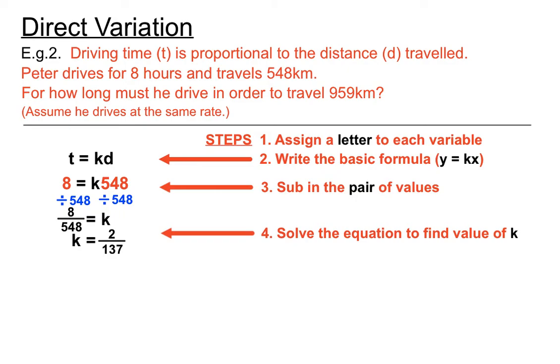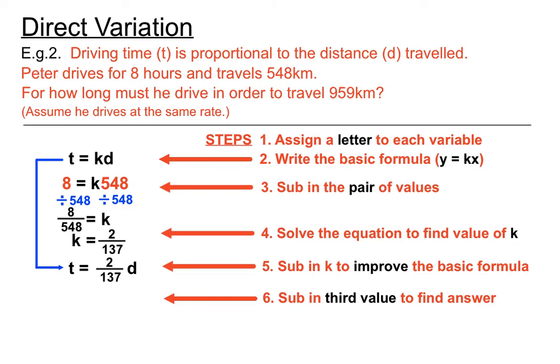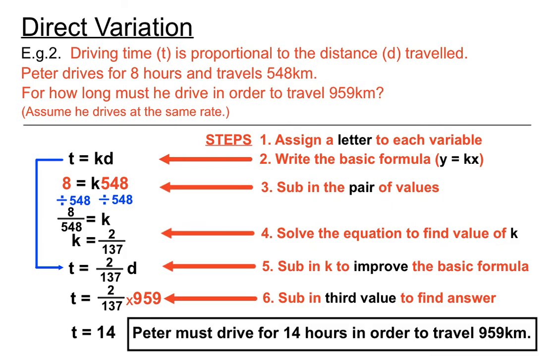We've found a value for K. Can you remember the next step we do here? Once we've found the value of K, we can improve the formula by subbing in K and replacing K in the original basic formula with the value that we found. So we've got T equals, instead of T equals KD, we've got T equals 2 over 137 lots of D. Our last step is to sub in our third value. This is the number that's mentioned off to the side as the last thing. 959 kilometers. It's a D for distance. It's going to go in there and replace our D. So we'll multiply it by 959 instead of D and we'll get 14. T was in hours. So we've just figured out that Peter must drive 14 hours in order to travel 959 kilometers.